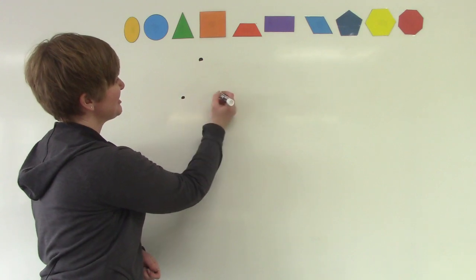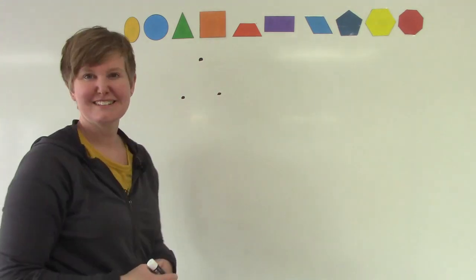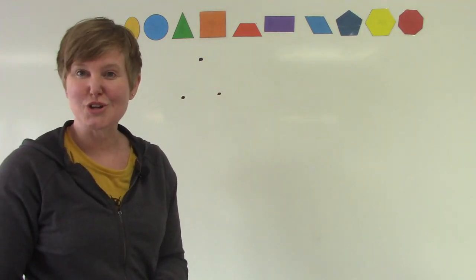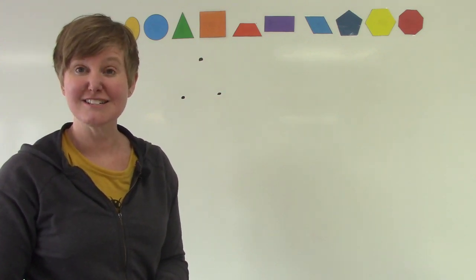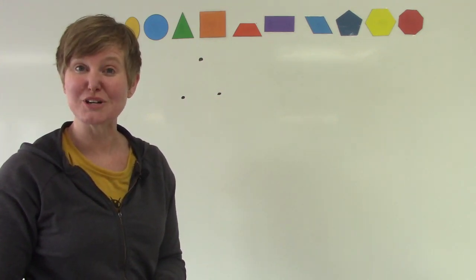One, two, three. Those dots are where our angles are going to be. And we're going to connect the dots to draw our shape.